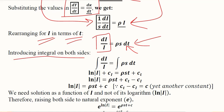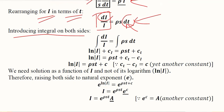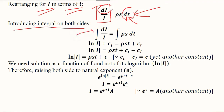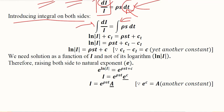We introduce integrals on both sides because we want to get rid of the differentials. We want an equation in an algebraic form without any integrals or derivatives. So integrals are applied on both sides. On the left-hand side, the constant of integration is cᵢ, and on the right-hand side, the constant of integration is cₜ, meaning they are based on their respective variables — investment and time.